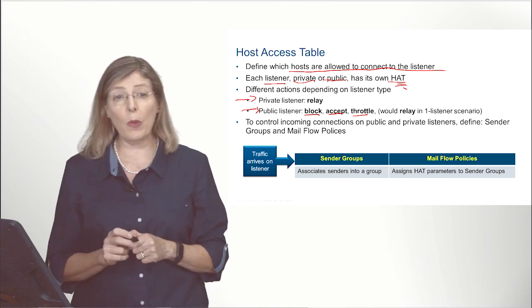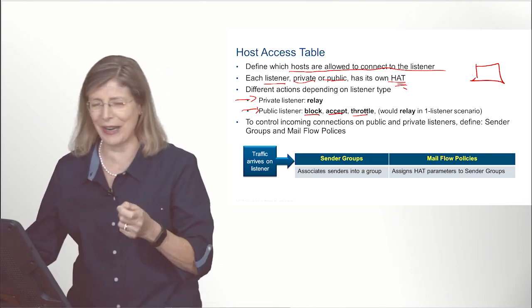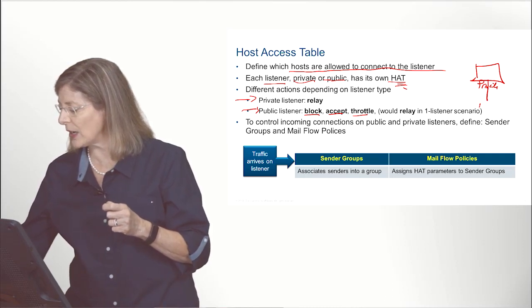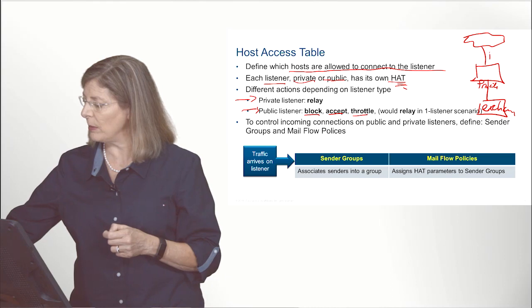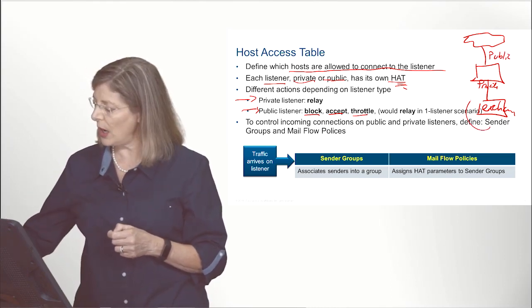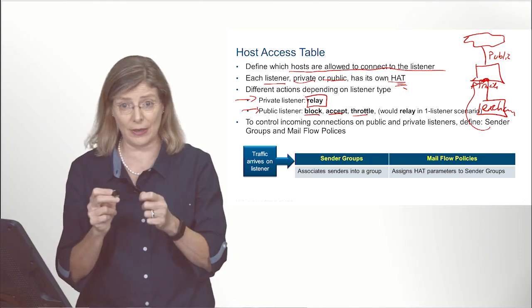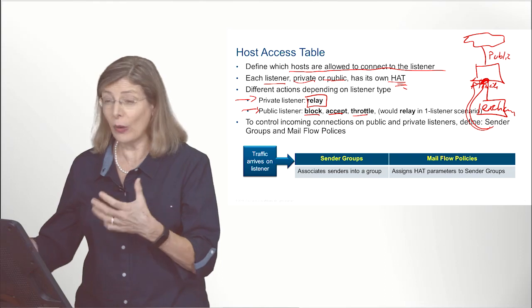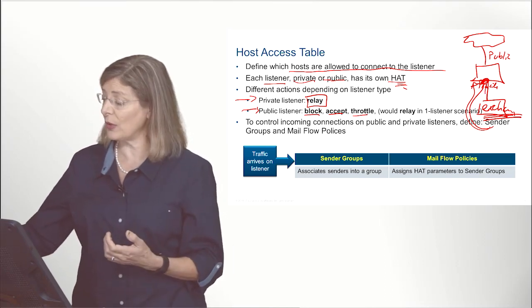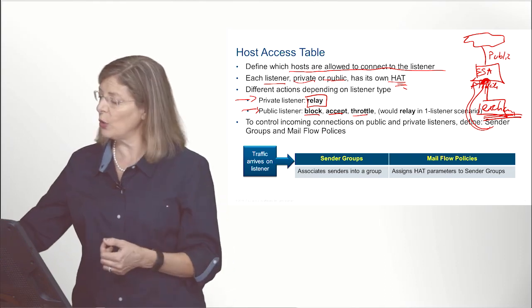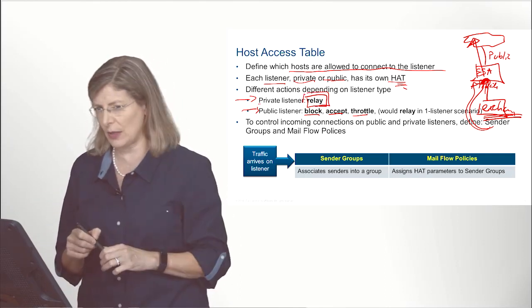A private listener is what we call a relay listener. My private listener is actually pointing to my corporate Exchange server, and I have my public listener facing the internet. The job of my private listener is to relay traffic — it receives email from the Exchange server, and when the Exchange server sends email to the ESA, you relay it back to the internet. So the job of a private listener is to relay email back to the internet.